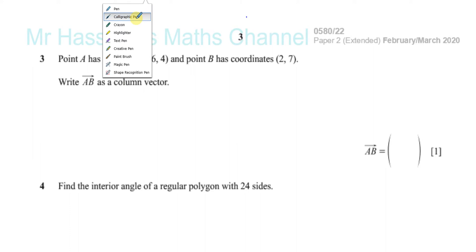We're told here that point A has coordinates 6, 4 and point B has coordinates 2, 7. Write AB as a column vector.